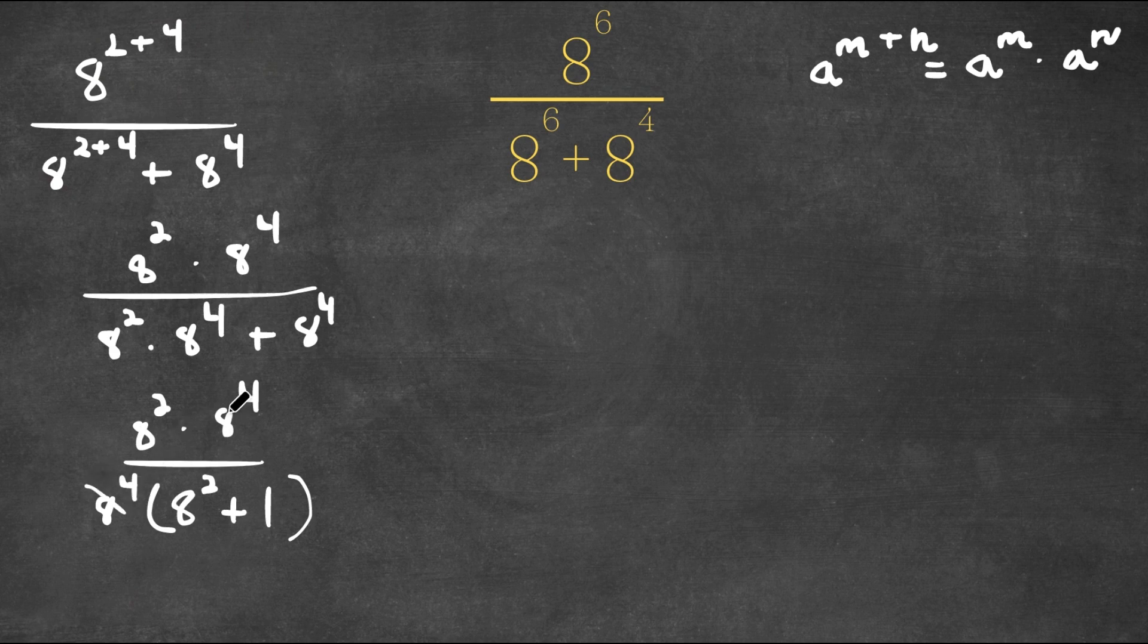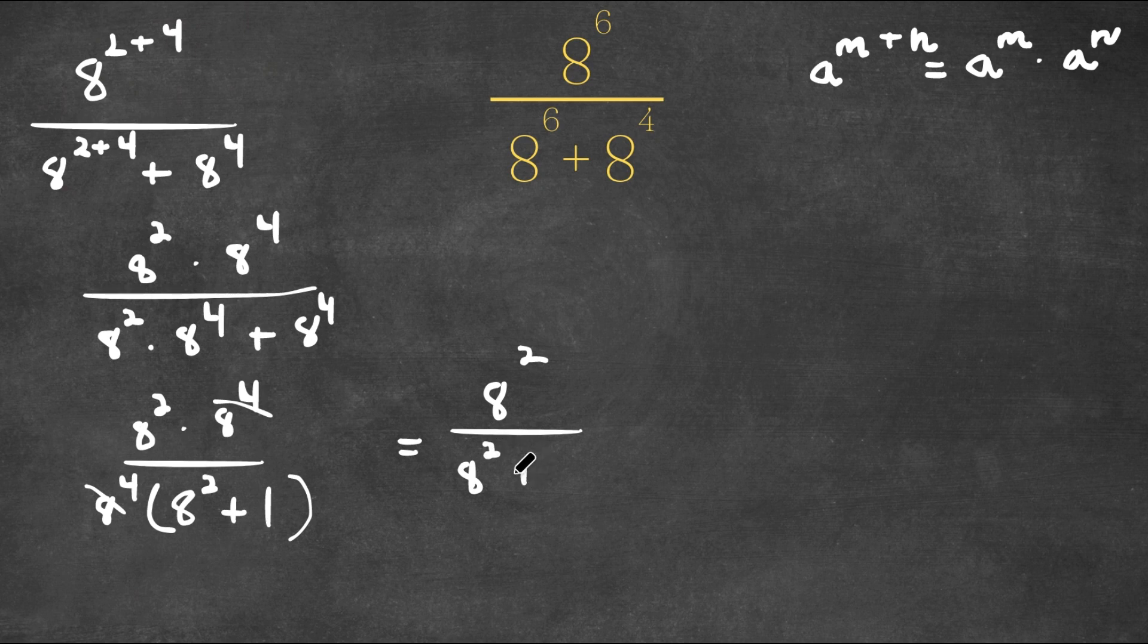As you can see, these two can cancel out because they're the same. And this would equal 8 squared over 8 squared plus 1.